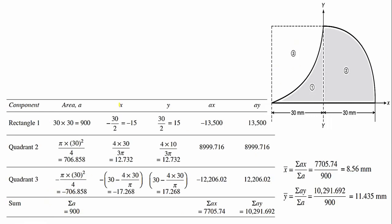Next, we calculate the centroid x̄ and ȳ for each simple figure. For the rectangle, the centroid is at B/2 and D/2. B = 30, so B/2 = 15. Since we measure left of the origin (y-axis), x̄ is negative: x̄ = −15. For ȳ: D/2 = 30/2 = 15. Since the centroid is above the x-axis (origin), it is positive: ȳ = +15.